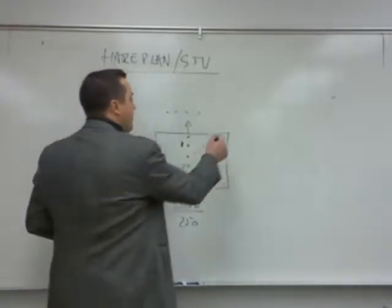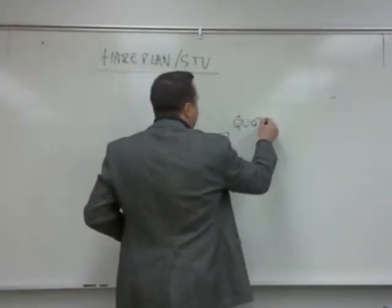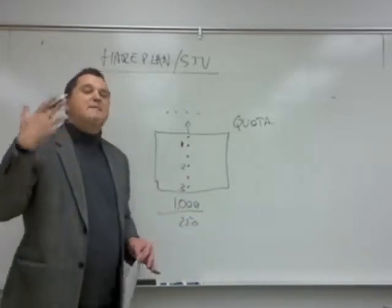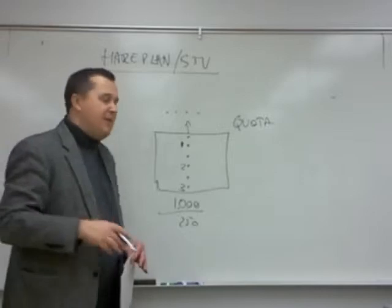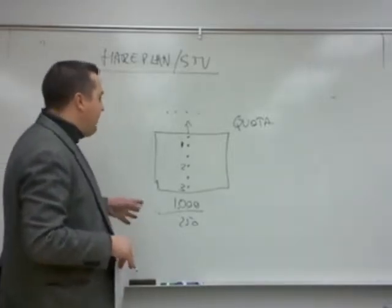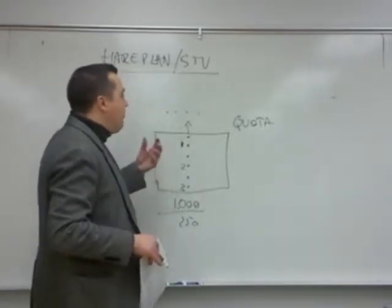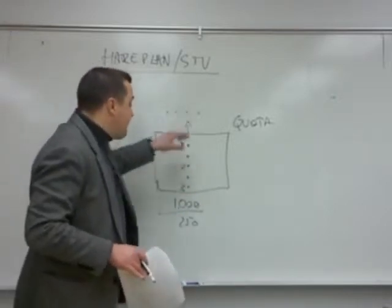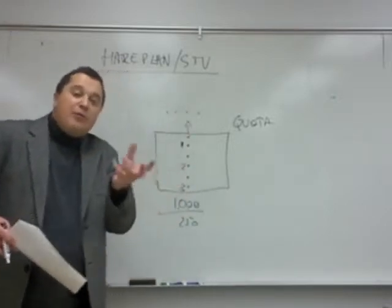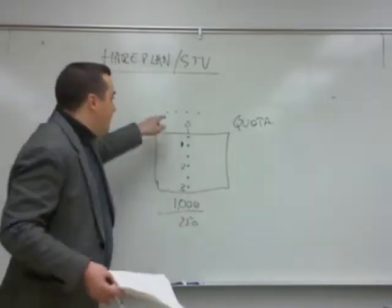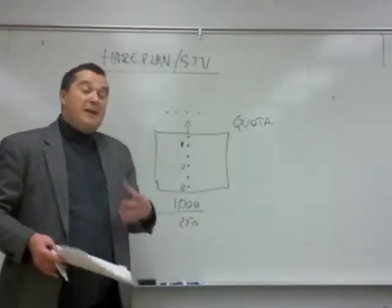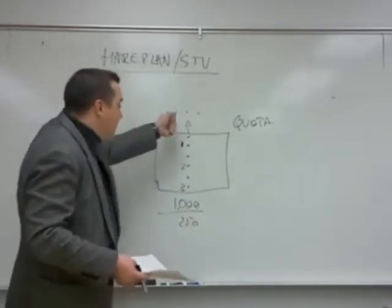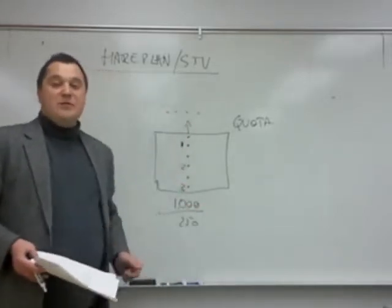So it's based on quotas. The quota is basically determined by a formula — and this is not the exact formula, but I'm trying to give you the principle. The quota is how many votes one seat needs in order to be elected. If it's four seats and 1,000 voters, a quota would be a quarter — basically 250 — which you would need to get to be one of the people chosen.